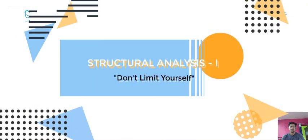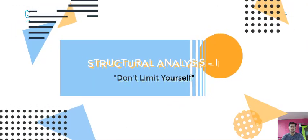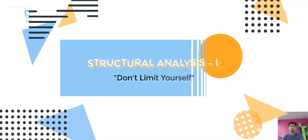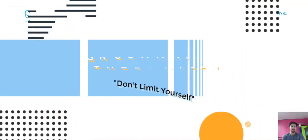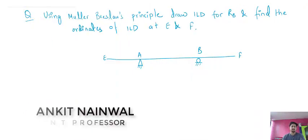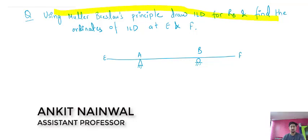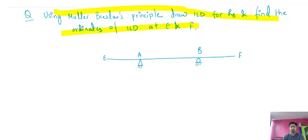Hello everyone, my name is Ankit Nainwal and today we will be starting with the numerical based on the Muller-Bresslaw's principle. The first numerical says: using Muller-Bresslaw's principle, draw the ILD for RB and find the ordinates of ILD at E and F.